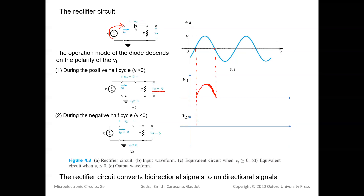We can also plot the waveform of VD, the voltage across the diode. During the positive half cycle, VD is zero because the diode acts as a short circuit.